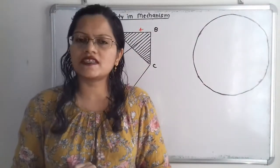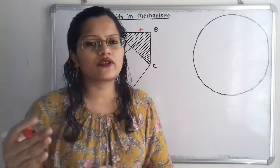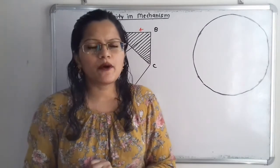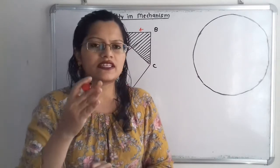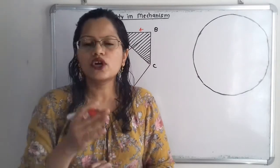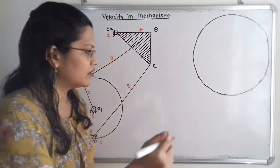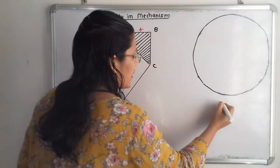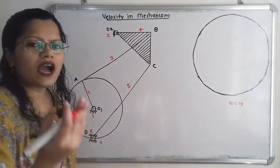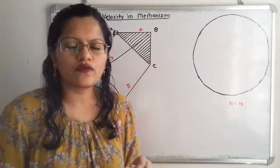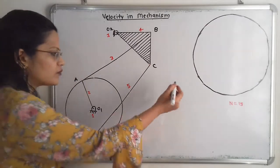Now we have to find out how many instantaneous centers there are. Using the formula with n = 6 links: n(n−1)/2 = 6 × 5 / 2 = 15. So there are 15 instantaneous centers. To find these, we have to prepare a table.